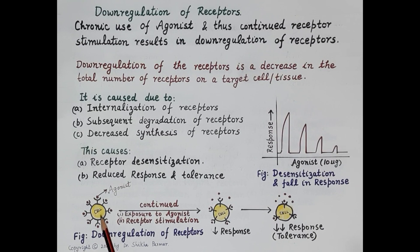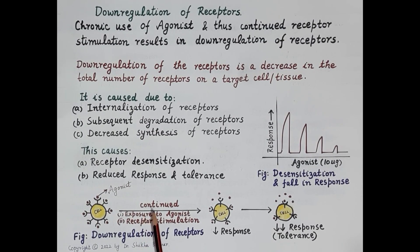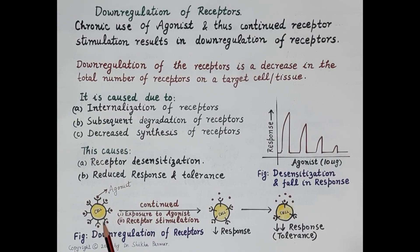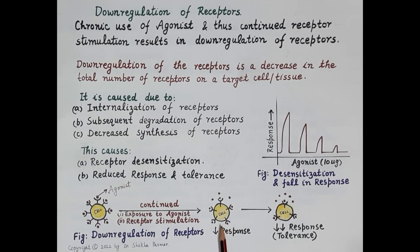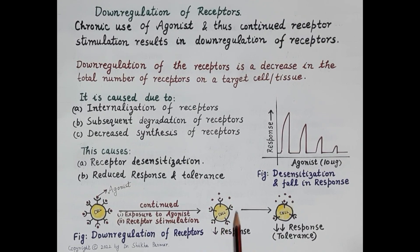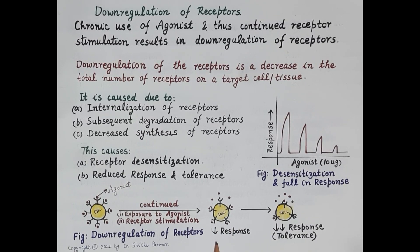Continued or chronic use of salbutamol results in continued exposure to the agonist and continued stimulation of beta-2 receptors. This results in down regulation of the beta-2 receptors. As shown in the diagram, the number of beta-2 receptors has reduced, so fewer salbutamol molecules bind to the receptors and therefore the response of the drug is reduced.